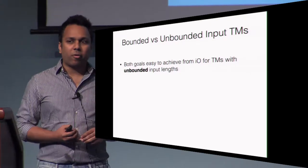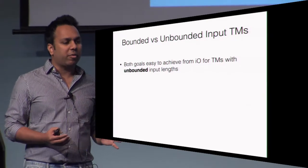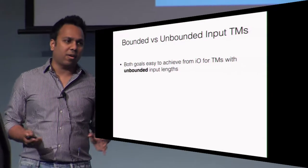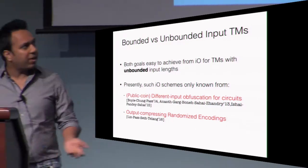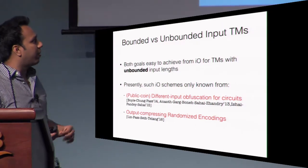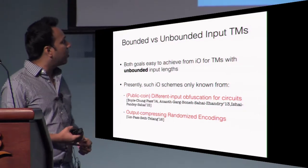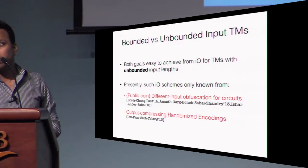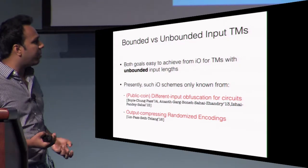Before stating our results, let me mention that if you pause for a moment and think about both of these questions, you'll see that they are quite easy to realize if you were given I.O. for Turing machines that supports inputs of unbounded length. However, presently such I.O. schemes are not known from I.O. for circuits. The only ways we know how to achieve I.O. for Turing machines with unbounded input length are either by using the stronger notion of differing inputs obfuscation, a weaker version called public coin differing inputs obfuscation, or another notion called output compressing randomized encodings. None of these primitives are known to be realizable from indistinguishable obfuscation, and our goal is to solve both of these problems using I.O. for circuits.